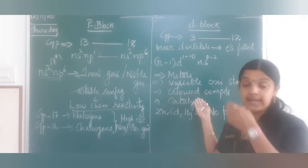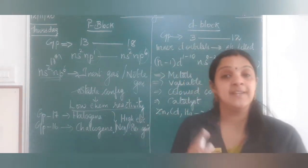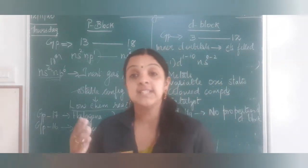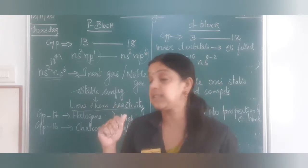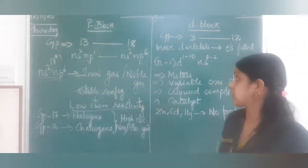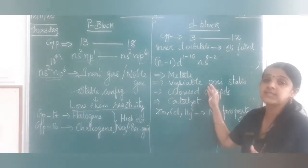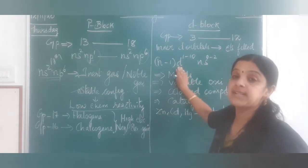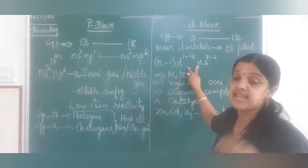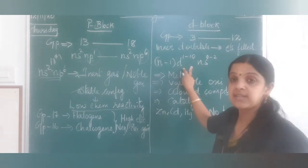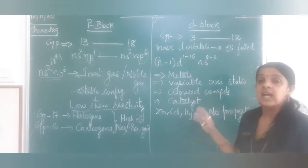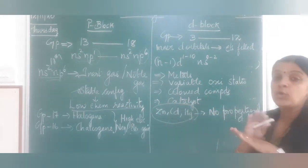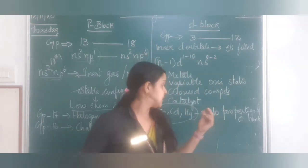We learned in 10th standard about transition elements — iron used as a catalyst, colored compounds seen with manganese (as in potassium permanganate), cobalt (pink color), and variable oxidation states like Fe²⁺/Fe³⁺, Co²⁺/Co³⁺, and chromium with 2+ and 3+. All these are metals that lose electrons. Variable oxidation states arise because along with the S subshell, the inner D subshell also participates in chemical reactions — the energy difference between D and S is very low.